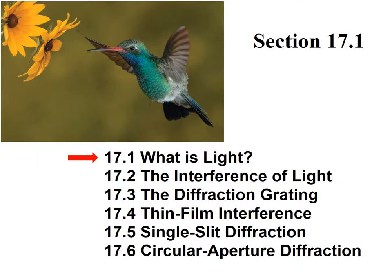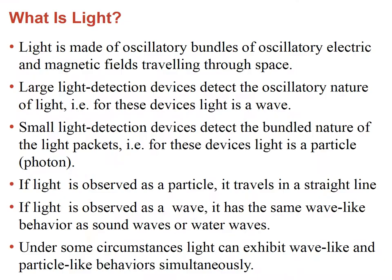Section 17.1: What is light? We saw before that light consists of electric and magnetic fields traveling and oscillating in space. Light can also be treated as particles depending on the detection device — these light packets are known as photons. However, for most examples we'll encounter, light is treated as a wave.